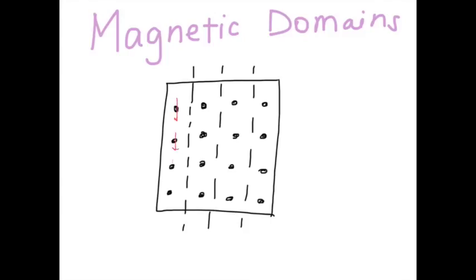So the way this would look, if we have these atoms, is the fields would all line up to point the same way, giving this magnetic domain a magnetic force.